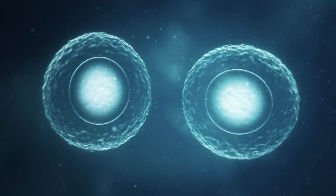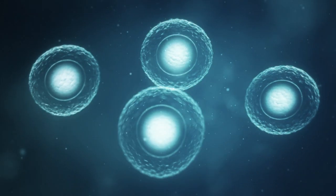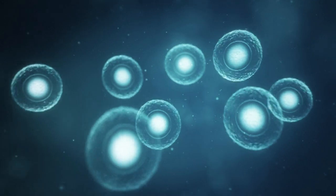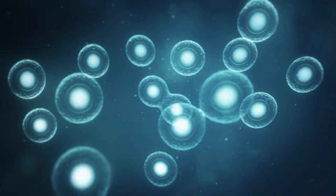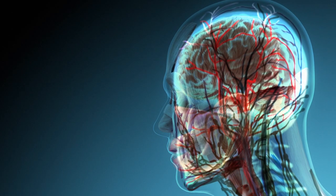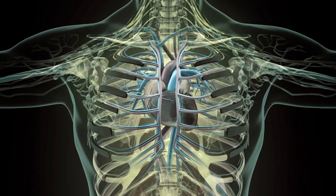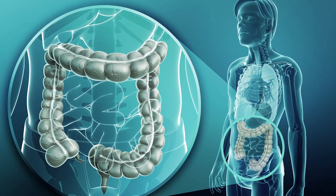Adult stem cells are responsible for growth and repair of tissues and organs in our bodies. In fact, they can become any cell in our body: bone, neurons, cartilage, muscle, pancreas, heart, skin and blood.